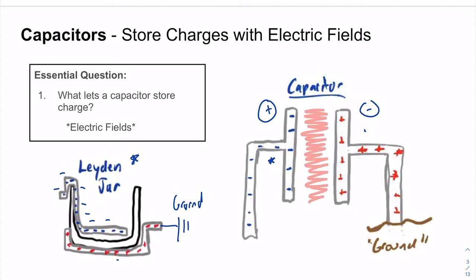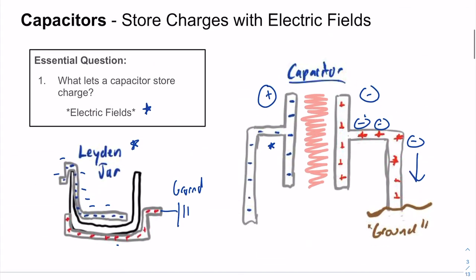And so the question becomes, how is it or why is it that the capacitor, why did we have the electrons over here decide to move away? And electric fields gives us this answer. What lets a capacitor store charge?